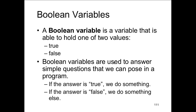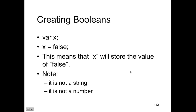Boolean variables hold a value that's either true or false. You can assign the value returned from an expression to a variable, then check the variable: if true, continue; if not, your form validators will do this as well. Boolean variables are used to answer simple questions — if the answer is true, we do something; if it's false, we do something else. Creating a Boolean variable: var x, then x = false. There are no data types in JavaScript, so when you assign false, it's automatically a Boolean — it's not a string and it's not a number.